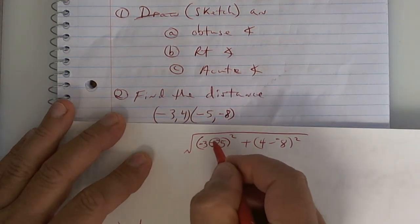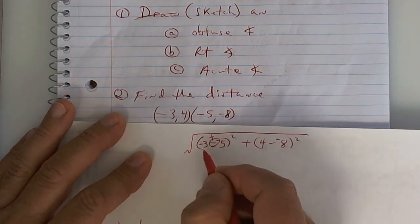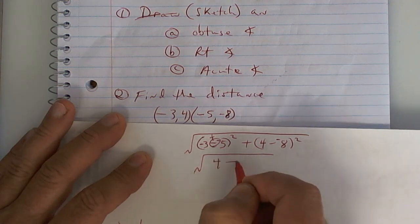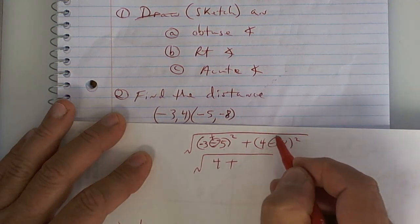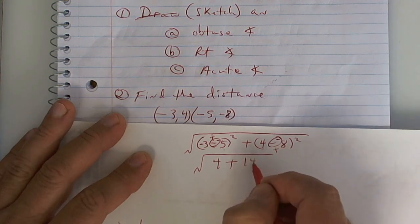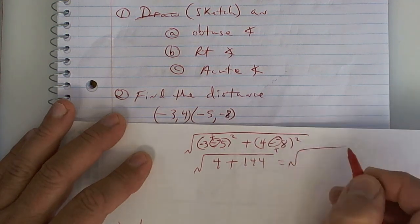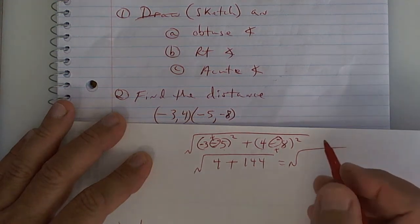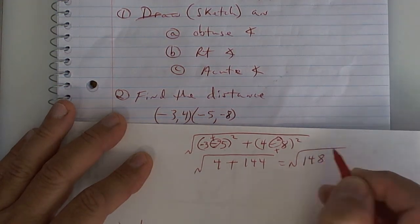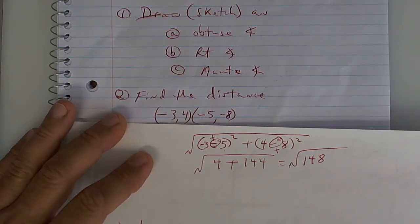All right. This becomes a plus. What's 5 minus 3? What's 2 squared? Very good. Excellent. This becomes a plus. What's 8 plus 4? What's 12 times 12? So the answer that I want whenever we get to a test is going to be the square root of 148. Is everybody clear on that? You have to be able to do the distance formula.